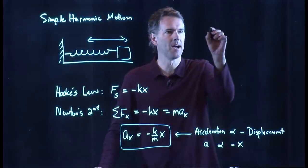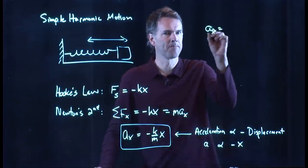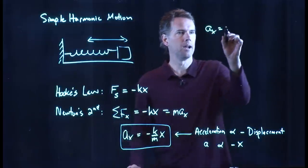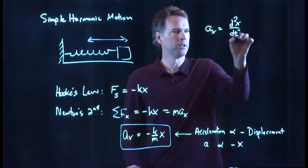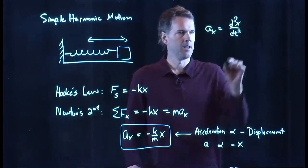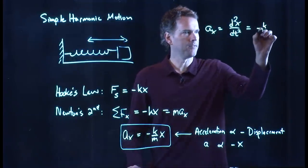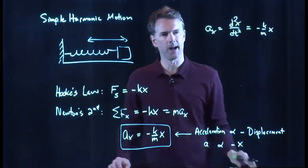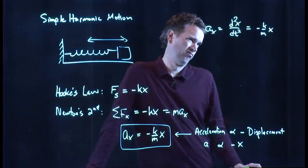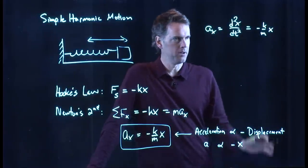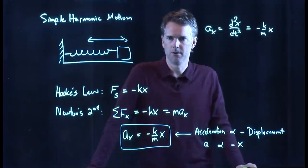Let's take a look at this math right here. We have a sub x, but we know what a sub x is. A sub x is d squared x dt squared. And that is negative k over m times x. And that looks a little bit formidable.